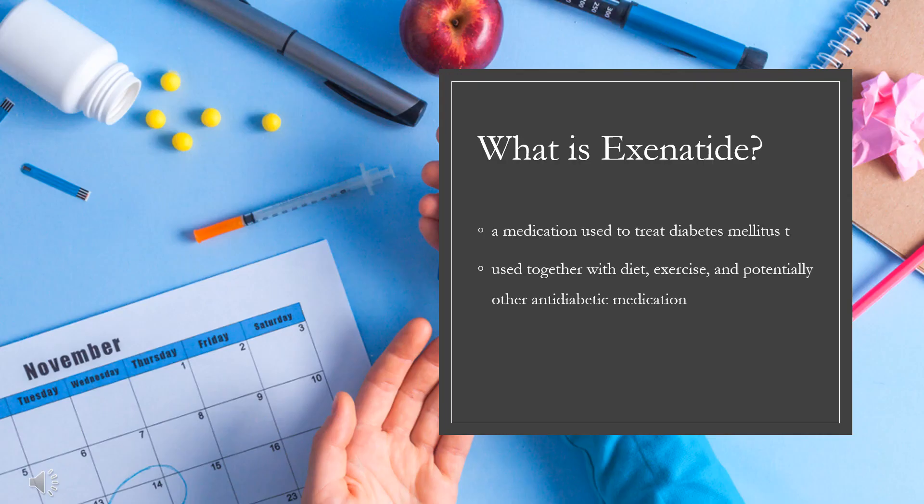Exenotide, sold under the brand name Byetta and Bydureon among others, is a medication used to treat diabetes mellitus type 2. It is used together with diet, exercise, and potentially other antidiabetic medication. It is a treatment option after metformin and sulfonylureas. It is given by injection under the skin. Exenotide was approved for medical use in the United States in 2005. In 2019, it was the 312th most commonly prescribed medication in the United States, with more than 1 million prescriptions.